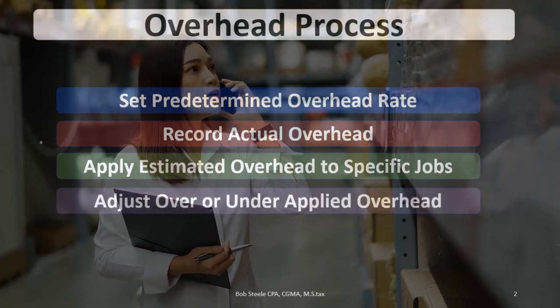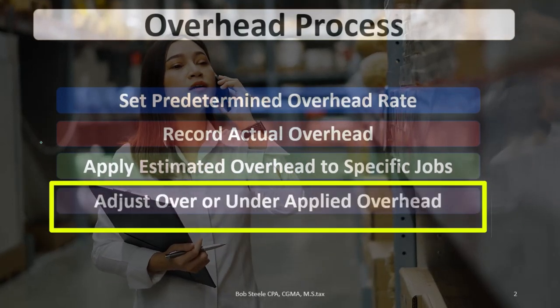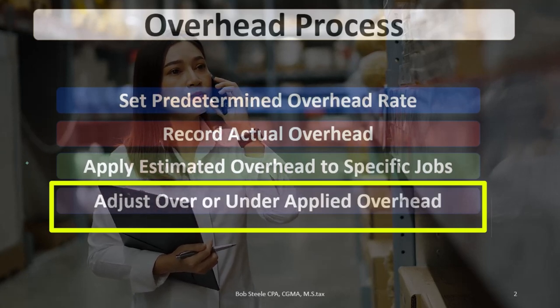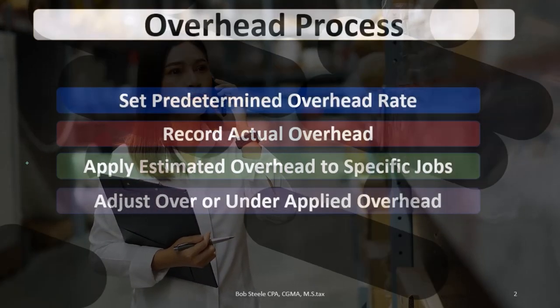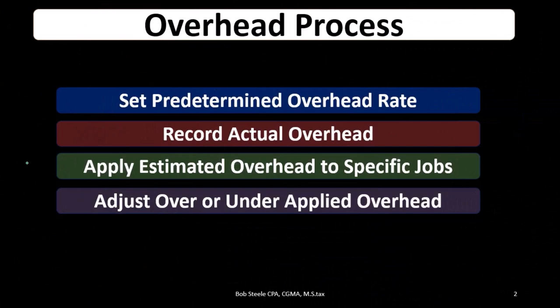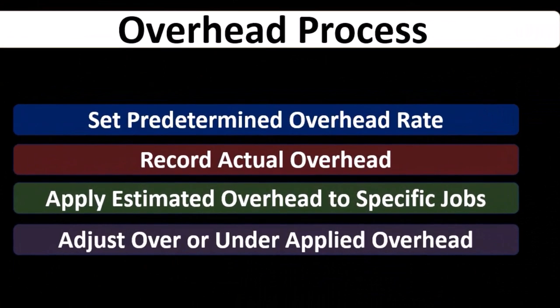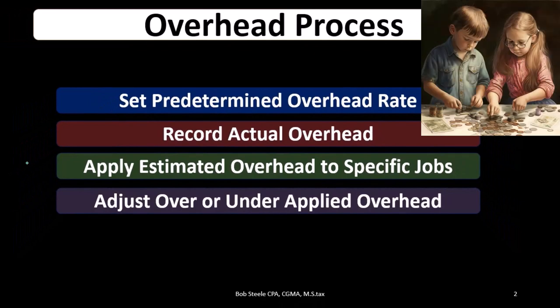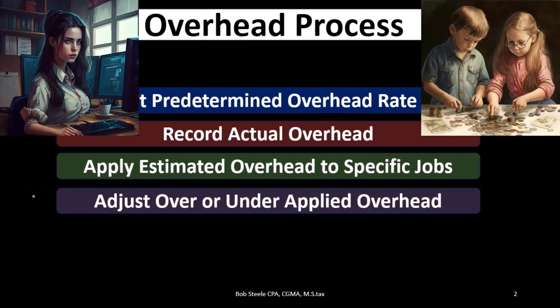Then we're going to have to adjust the over or under applied overhead. The predetermined rate is an estimate to apply overhead to jobs — it's not going to match our actual overhead costs. Therefore, we will have a difference, which will be under or over applied, and we'll have to do something with that estimate difference at the end of the time period.